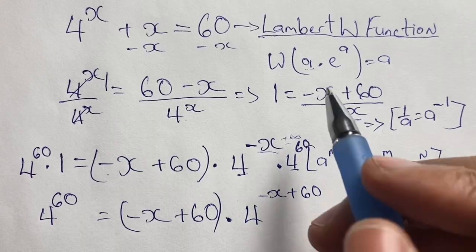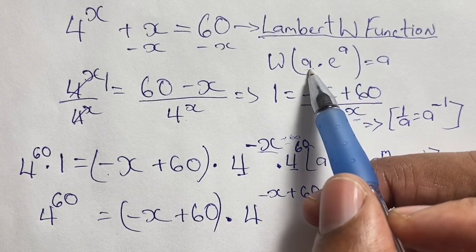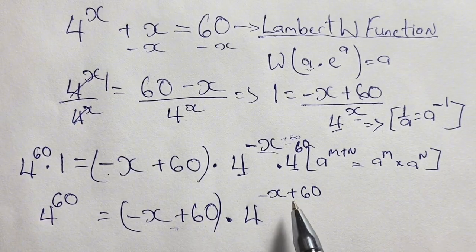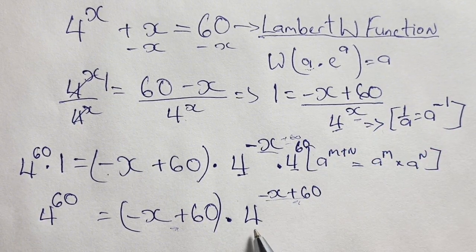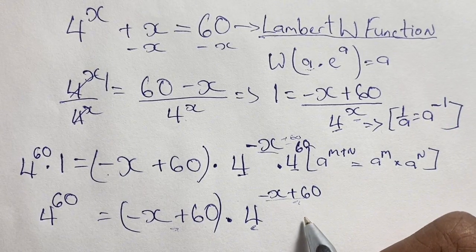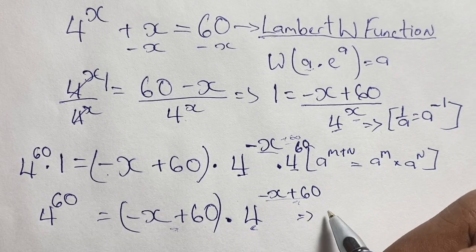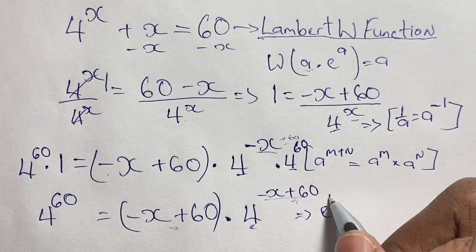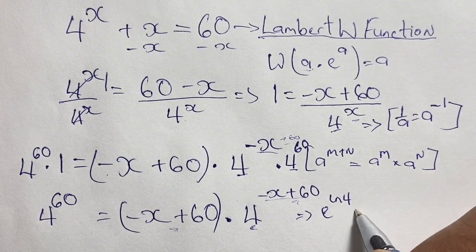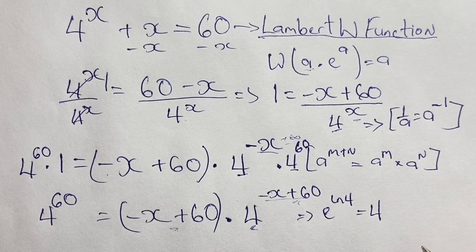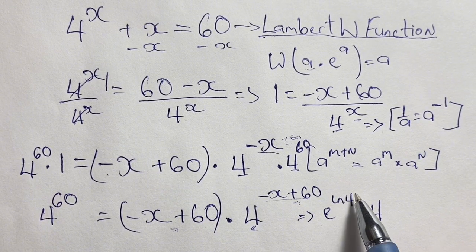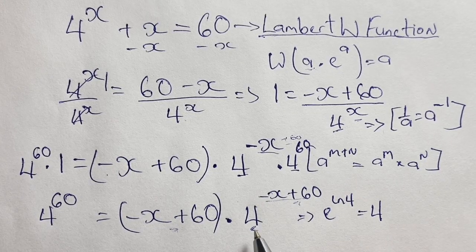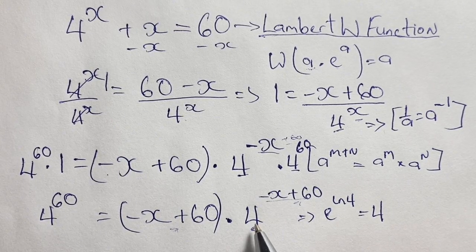As we are trying to write our equation in the form a times e to the power of a, we see negative x plus 60 in both the base and the power, but we don't yet have e. We can write 4 in the form of e by writing 4 as e to the power of ln 4. Since ln means the log of base e, the ln and e cancel out leaving just 4. So we substitute 4 with this expression.